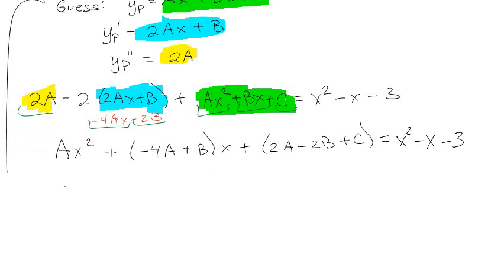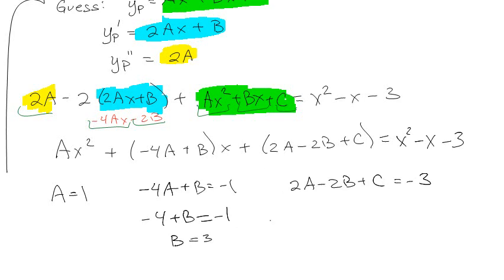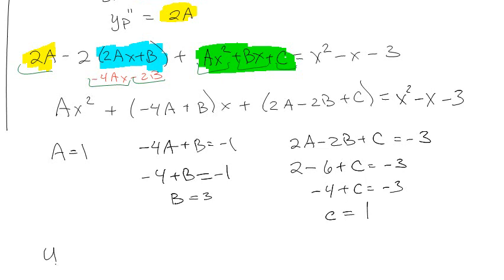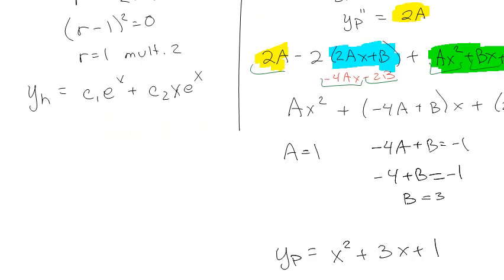So based on matching coefficients, a has to be 1. Minus 4a + b has to be negative 1, and 2a - 2b + c has to be negative 3. So minus 4 + b is negative 1, plus 4 on both sides, b is 3. And 2 - 6 + c is minus 3, minus 4 + c is minus 3, plus 4 to both sides, c is 1.